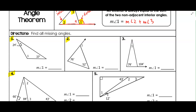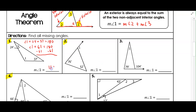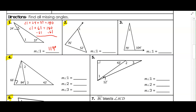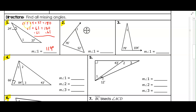For number one, we have three angles of a triangle and we only need to find one. We know all of them add up to 180. So angle one plus 24 plus 37 equals 180. That gives us angle one plus 61 equals 180. We subtract 61 from both sides and get that angle one is 119 degrees. That's our triangle sum theorem.